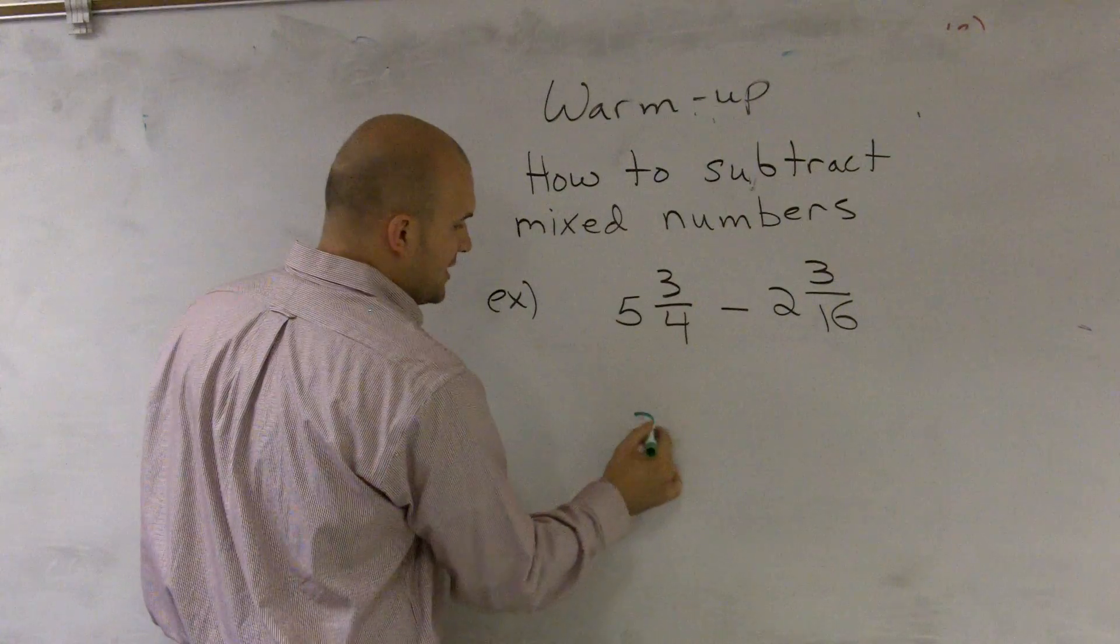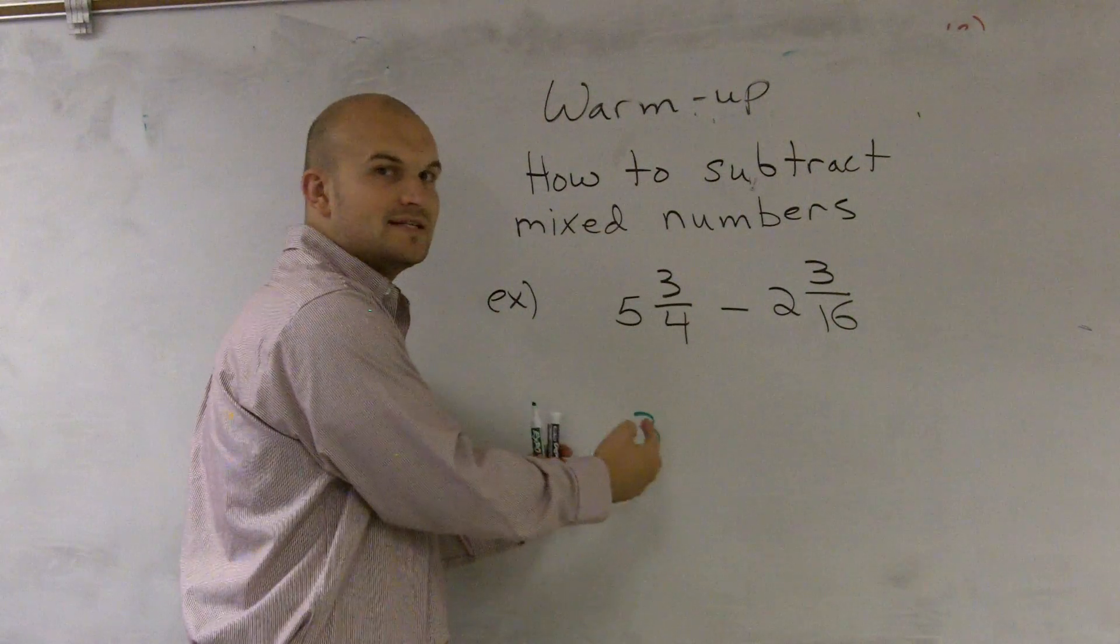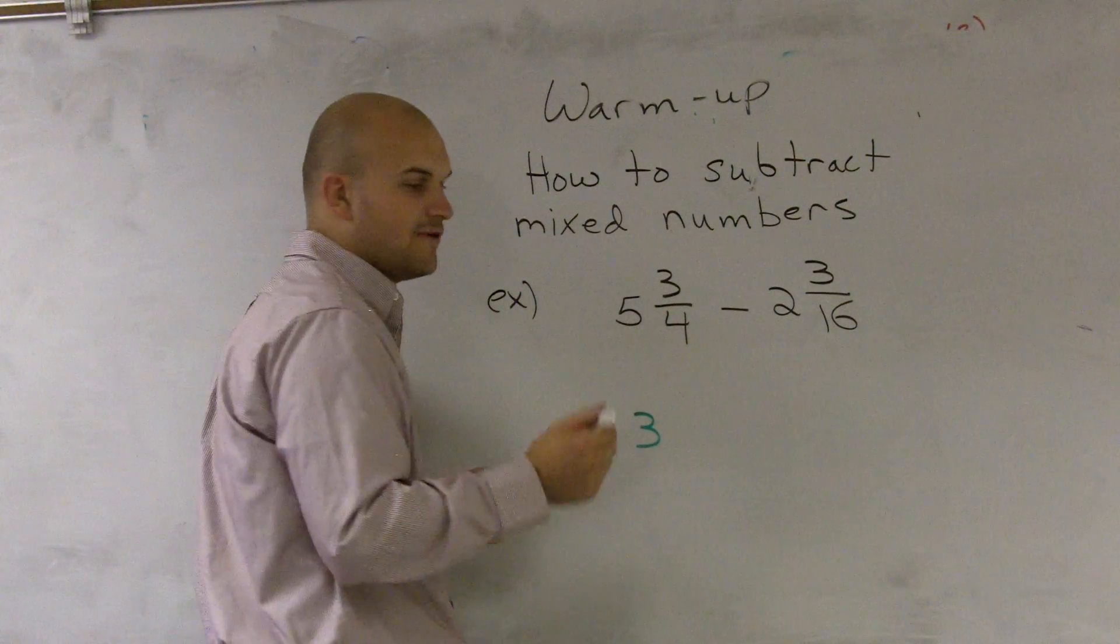So I do 5 minus 2 is going to become 3. And I'm just going to keep that to the side as I work on subtracting my fractions.